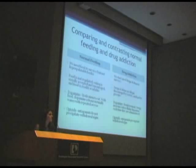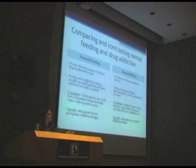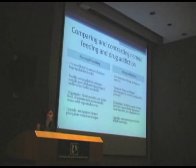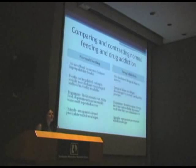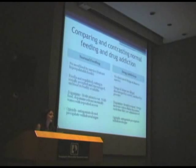Opioid systems in our brain have to do with the pleasurable aspects, the wanting and liking of different types of foods and also of drugs. There are antagonists that block opioid receptors in the brain. If you have a person or animal addicted to a drug and give them a drug that will block those opioid receptors, it will put them into a state of withdrawal — with shakes, tremors, and other behaviors associated with a withdrawal syndrome. But if you give that drug to someone who's just eating food normally, it won't do anything to them.